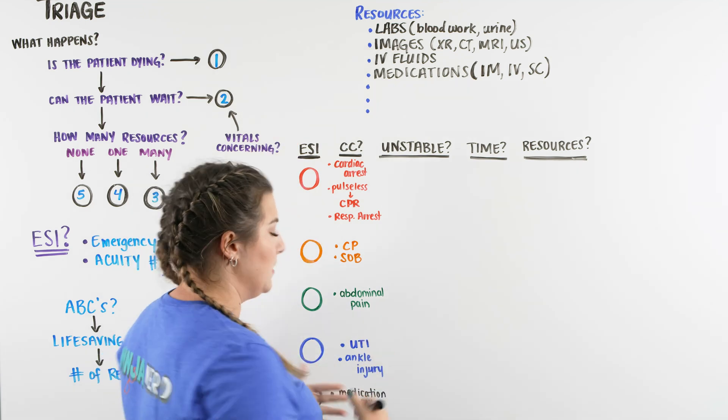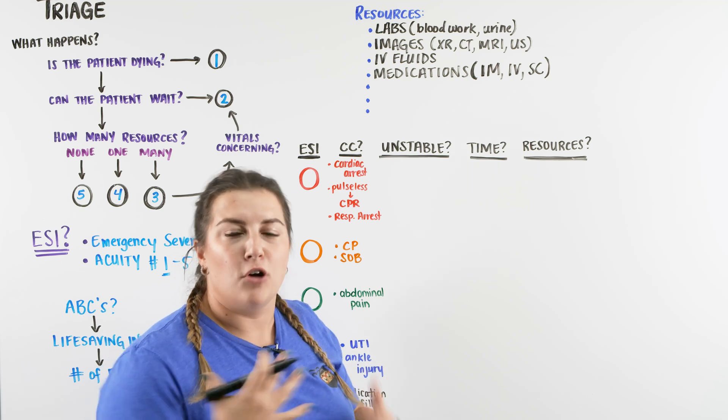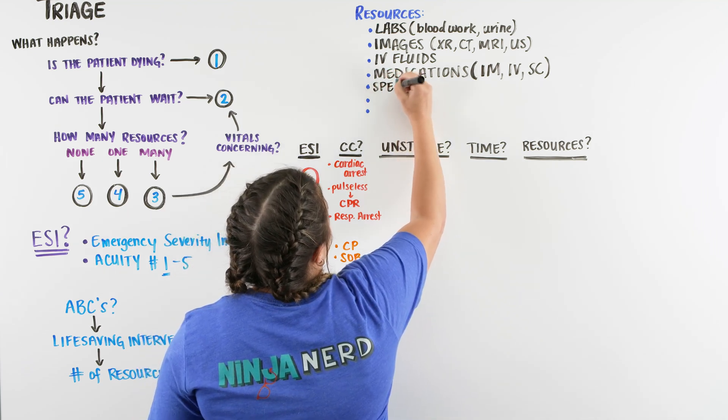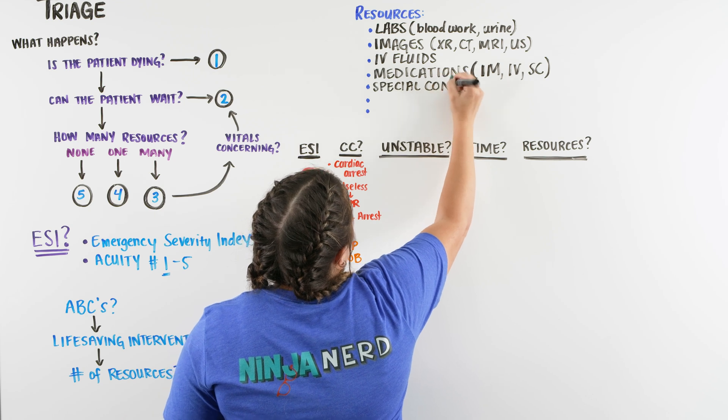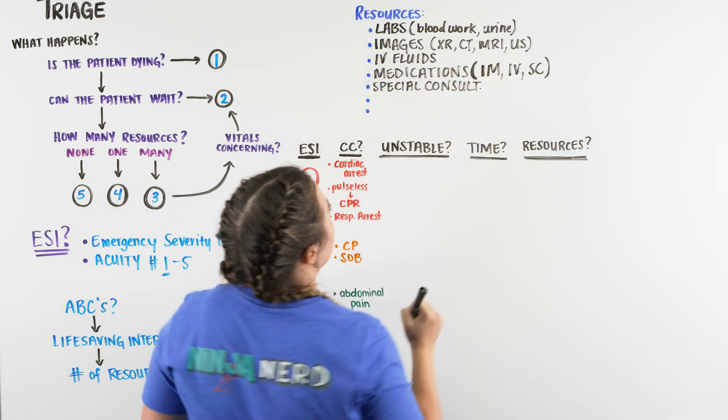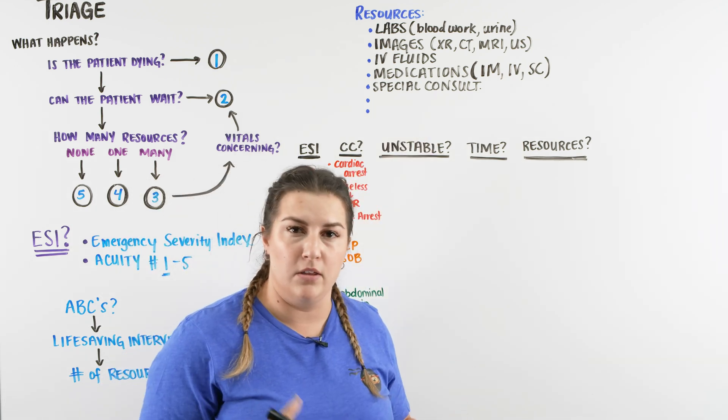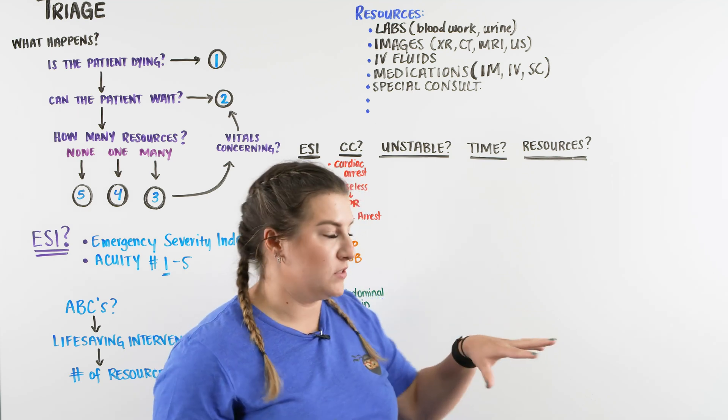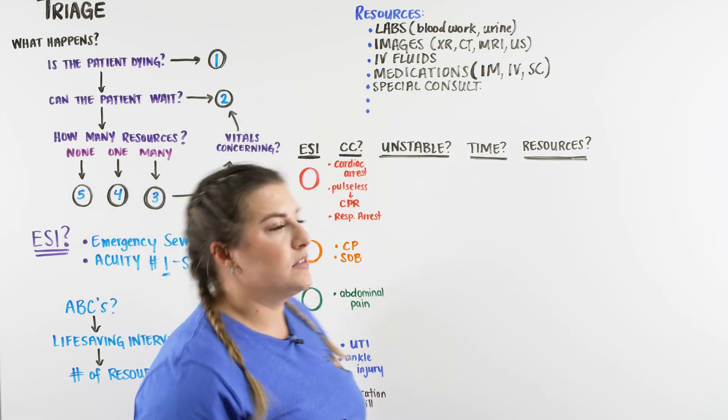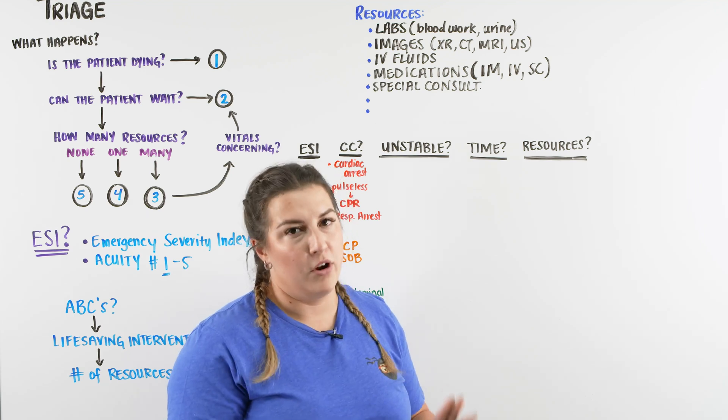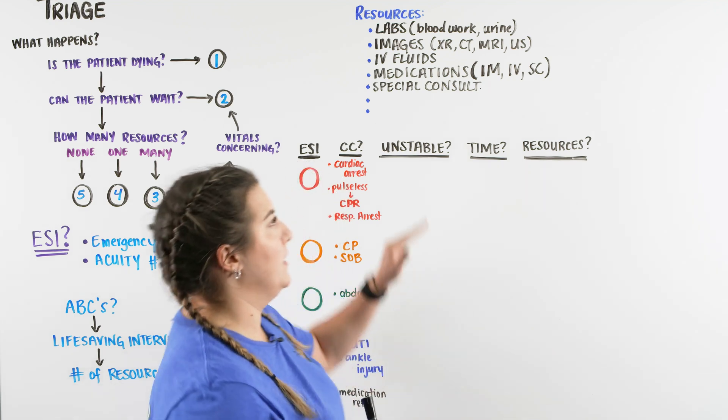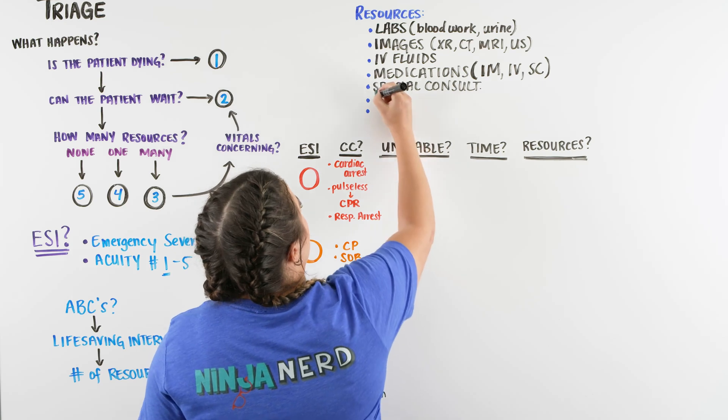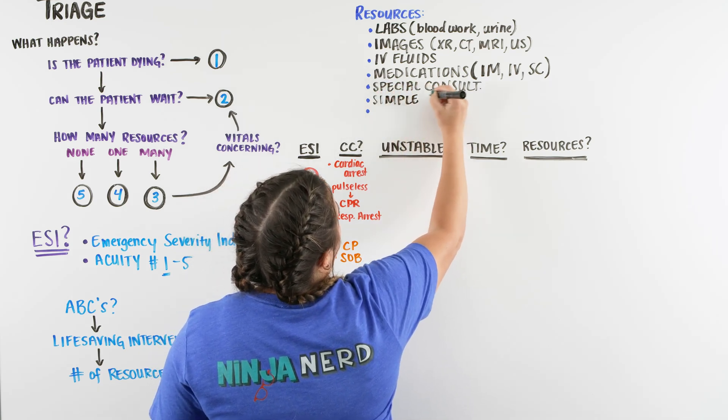Because of all this, we have labs, we have images, IV fluids, and medications. These are things that we can help with our patient that we can do as nurses. But then there's also resources they may need that are out of our control that we can also consider. One of them is a special consult. And when I say special consult, what are you thinking? Special consult is a special consultation to somebody maybe outside of the emergency department. So we have our primary doctors within the emergency room, and they're going to be able to take care of the patient. But they may need to consult things like cardiology or orthopedics or gastroenterology or surgery in order to find out what's going on with this patient and further their care. So that is also considered a resource.